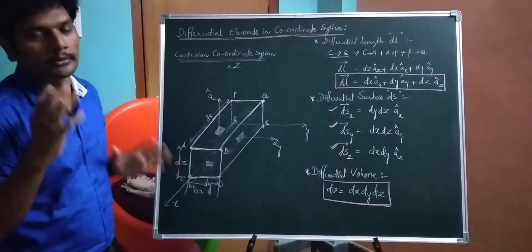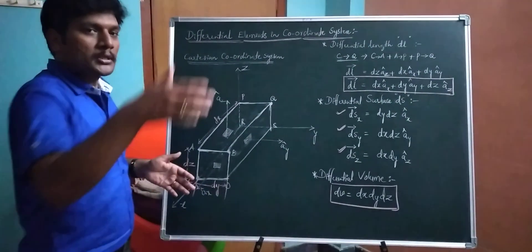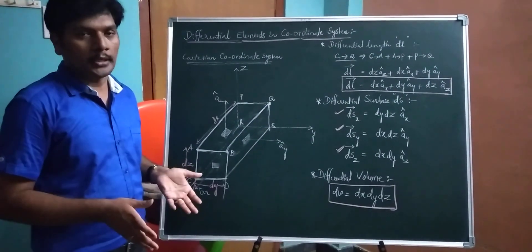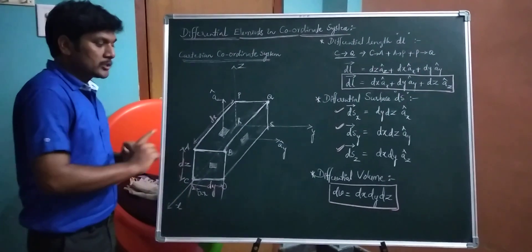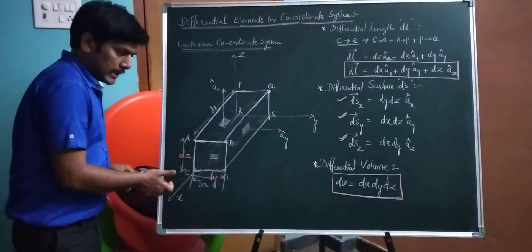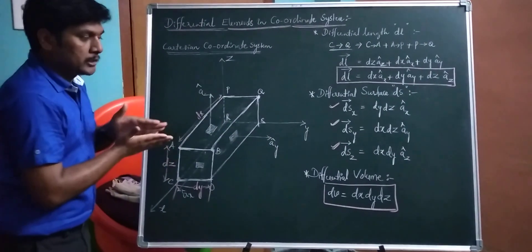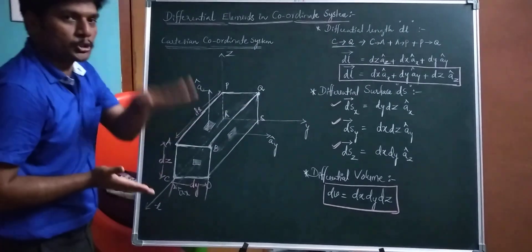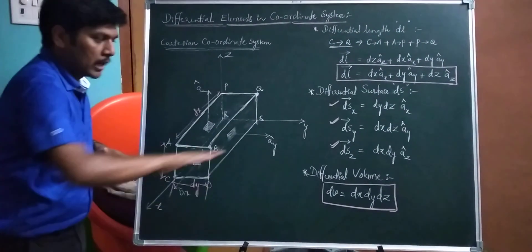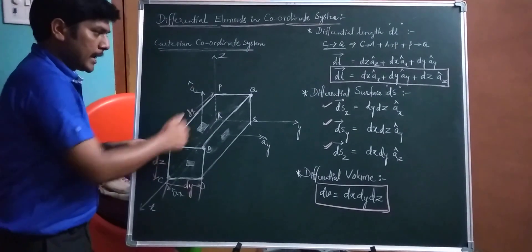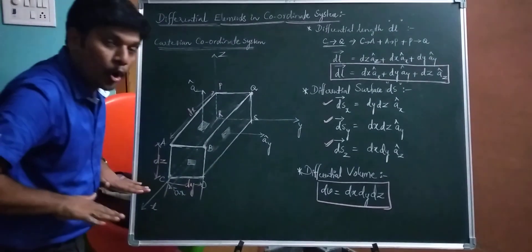Now consider the differential length. We look at which lines are oriented in the x direction, which in y, and which in z. The x axis is shown here. Lines aligning or following the x direction are lines AP, BQ, CR, and PX — these lines follow the x direction.